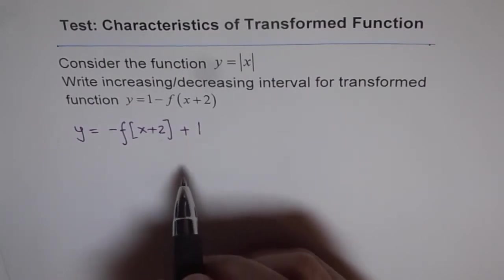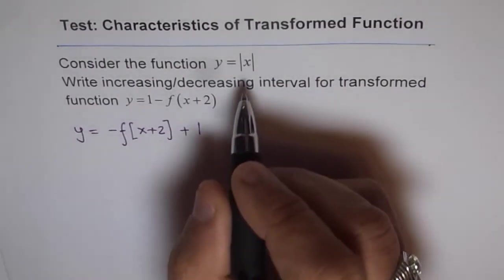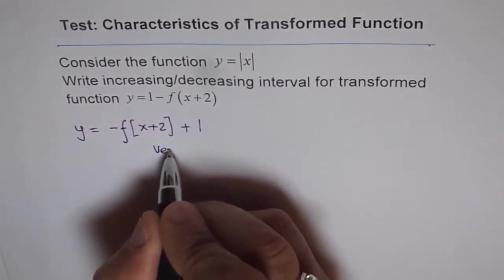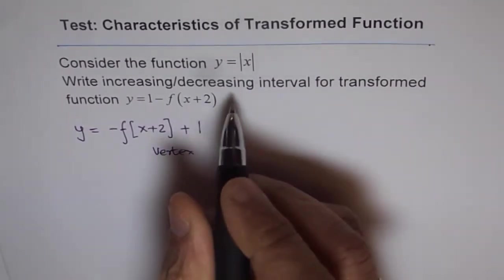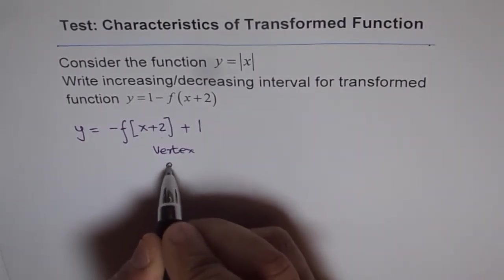In absolute x, where is the vertex? So we have a vertex here. Let's say vertex in absolute x will be actually at 0, 0.